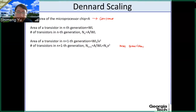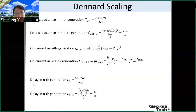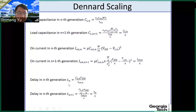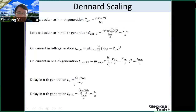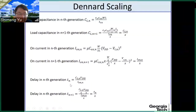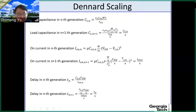Next we are going to derive the delay — how would the delay of the circuit change? If you recall lecture 13 on the delay, to the first order the delay of an inverter is CL (load capacitance) multiplied by the power supply voltage VDD, divided by the saturation current — that is the on-state current of the transistor. This is to the first order the delay.